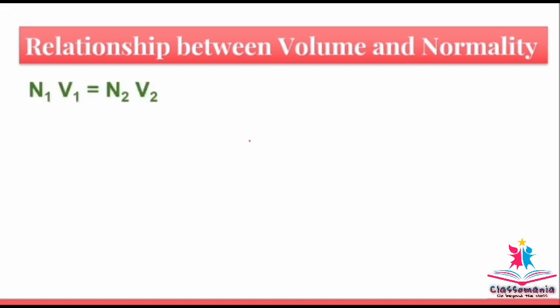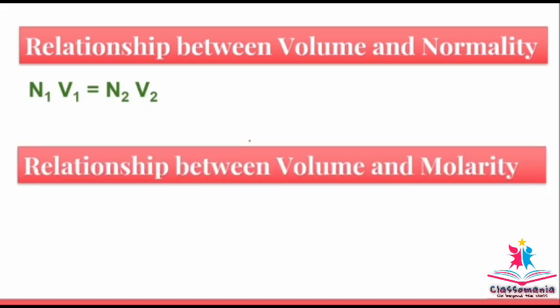If normality changes from N1 to N2 and volume changes from V1 to V2, the relation will be N1V1 = N2V2. Next is the relationship between volume and molarity — also called the molarity equation. If volume changes from V1 to V2 and molarity changes from M1 to M2, then M1V1 = M2V2. If you have any doubt in the topics we discussed, you can drop your question in the comment section. Thank you for watching.